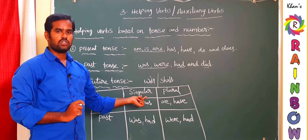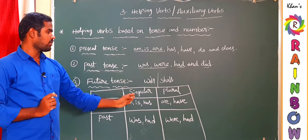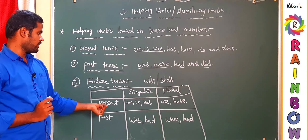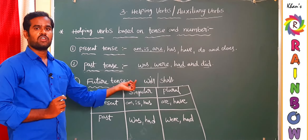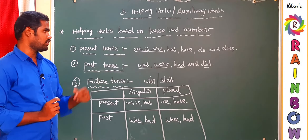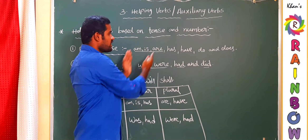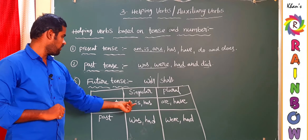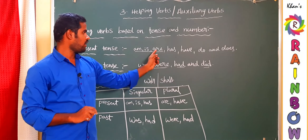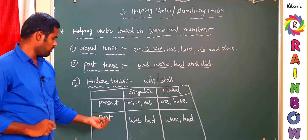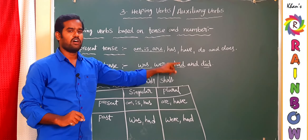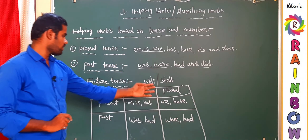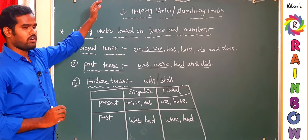Dividing helping verbs by number: present tense singular helping verbs are am, is, and has. Present tense plural helping verbs are are and have. For past tense: singular helping verbs are was and had; plural helping verbs are were and had. This is a very important topic. Please make notes, practice everything, and be ready with your own examples.